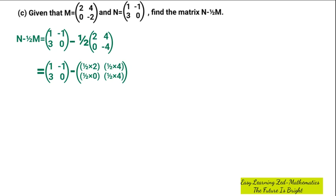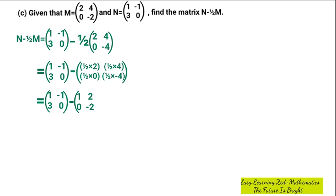Writing this out: one-half times 2 gives 1, one-half times 4 gives 2, one-half times 0 gives 0, and one-half times negative 2 gives negative 1. I'm now done multiplying the scalar by matrix M.